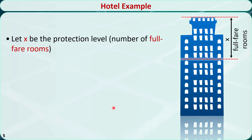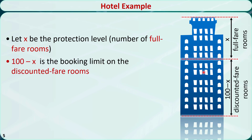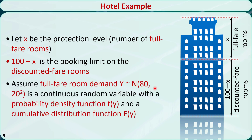Let x be the protection level — the number of full fare rooms. So 100 - x is the booking limit on the discounted fare rooms. That means after 100 - x rooms have been booked at the discounted fare, the hotel should start to take reservations at the full fare. We know the demand follows a normal distribution. Let f(y) be the probability density function and F(y) be the cumulative distribution function for the demand Y. We can convert this problem to a news vendor problem because it involves both an overstocking cost and an understocking cost.